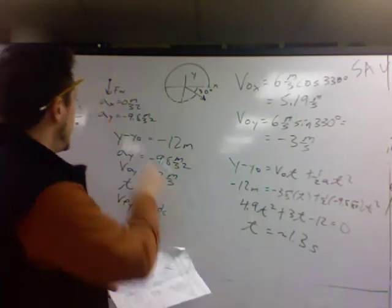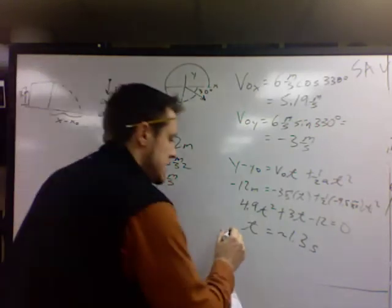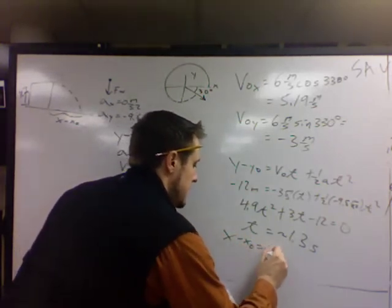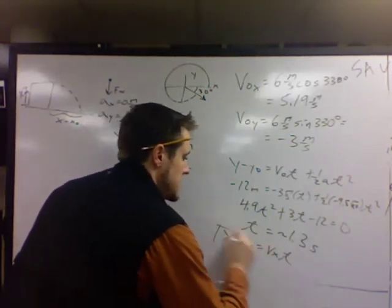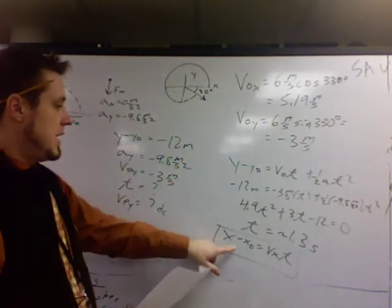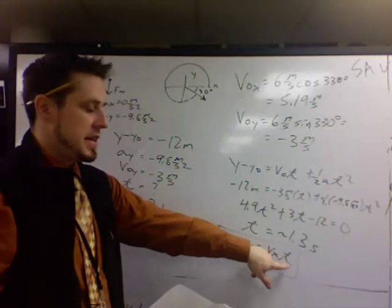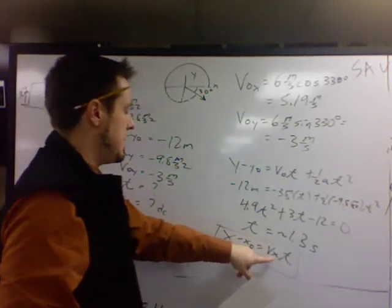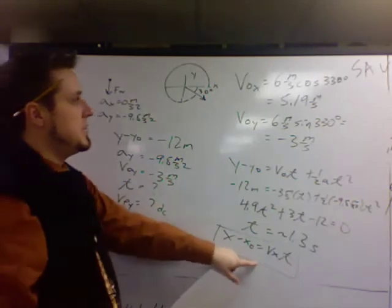At that point, you can figure out how far it goes in the x. So x minus x naught equals vxt. This is the only equation you ever need in the x direction if there's no acceleration. How far equals how fast times how long. Or in this case, displacement equals velocity times time. The velocity in the x direction never changes.